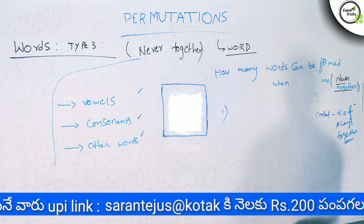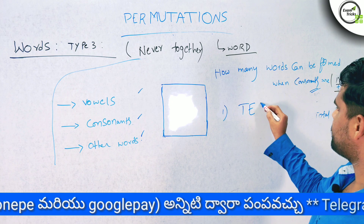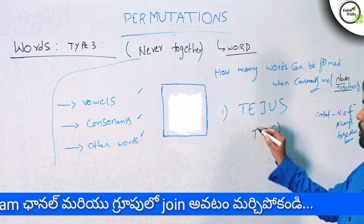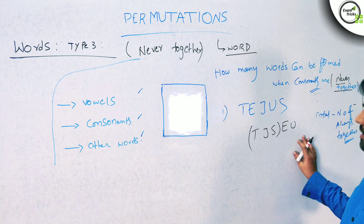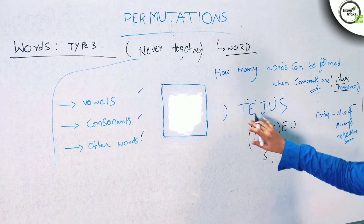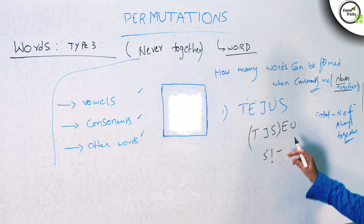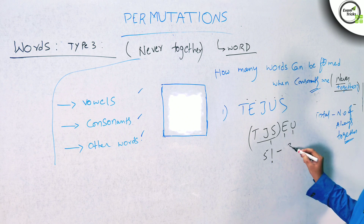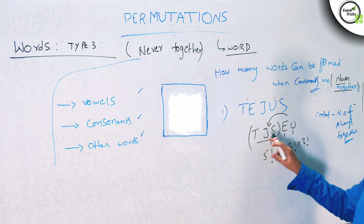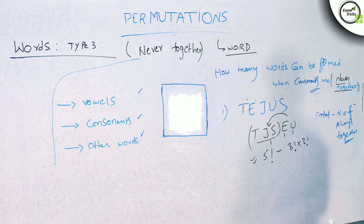Now, in place of vowels, when consonants are never together: the total arrangement is 5 factorial. Minus the always-together case for consonants T, J, S as a single block gives 3 units — 3 factorial — and inside the block, 3 factorial arrangements. So the answer is 5 factorial minus 3 factorial into 3 factorial.